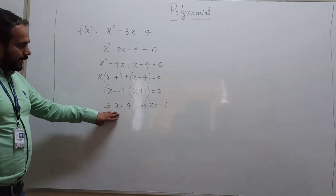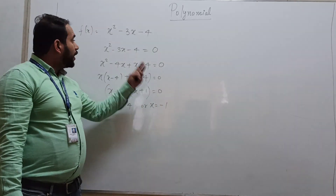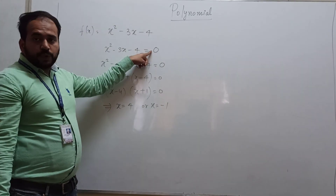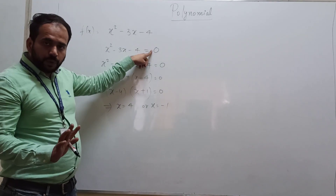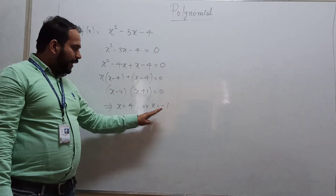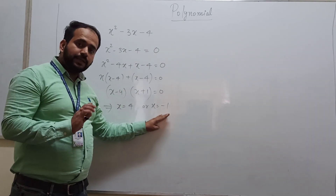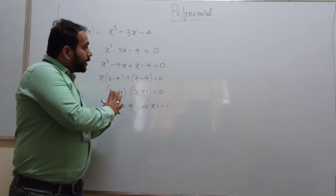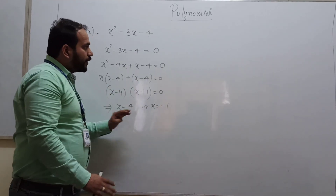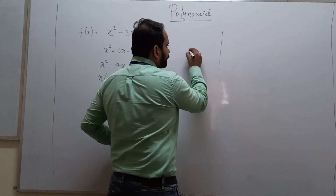So x minus 4 and x plus 1 equals 0, which means x can be 4 or x can be minus 1. At x equals 4 and at x equals minus 1, our polynomial is equal to 0 — meaning whenever x is 4 or minus 1, the value of y is 0. Now I will show you the graph of this function.